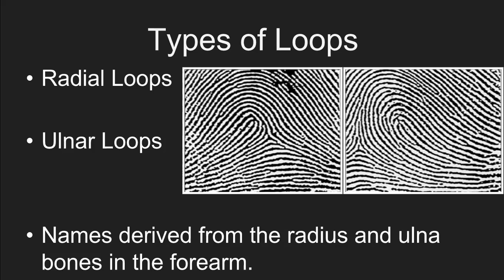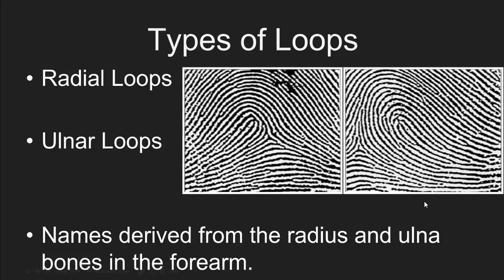What we need to talk about now is, once you've identified a fingerprint as a loop, how do we figure out whether or not that loop is a radial loop or an ulnar loop? We talked about fingerprints as either being left slanted or right slanted. Looking at these two fingerprints, the one on the left is a left slanted loop because the ridges flow in from the left side and flow out the left side after they recurve. The fingerprint on the right is a right slanting loop. But the question is, are these radial loops or ulnar loops?